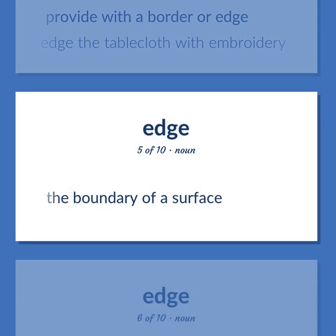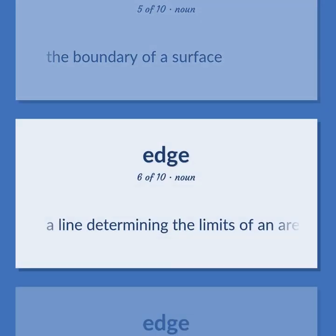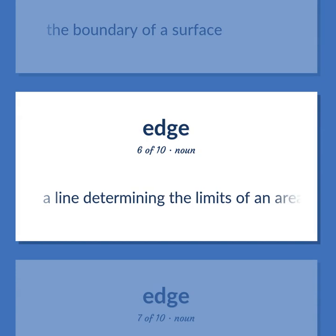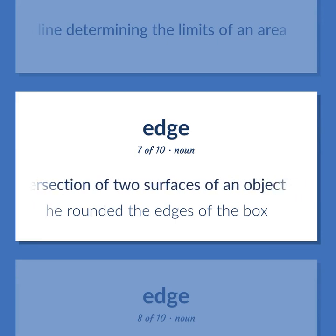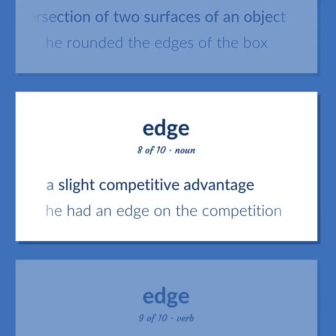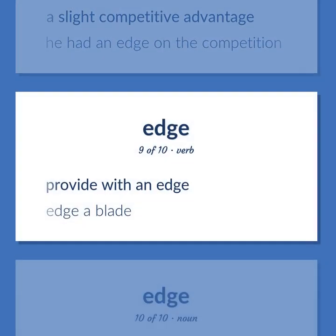EDGE: The boundary of a surface. A line determining the limits of an area. A sharp side formed by the intersection of two surfaces of an object. 'He rounded the edges of the box.' A slight competitive advantage. 'He had an edge on the competition.' Provide with an edge — edge a blade.